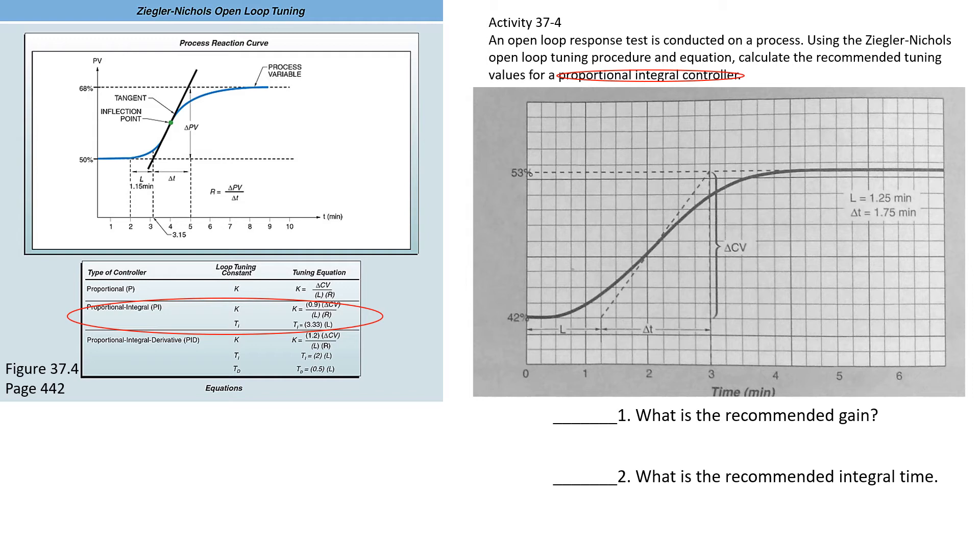That's where these two numbers, L and Delta T, came from. We go ahead and plug those numbers into our equation. The first thing we need to find is this R. Again, R is the rate of change or the slope of this line. We're finding the slope of the line for R, which would be the change in CV—rise over run, basically, how you find the slope of any line.